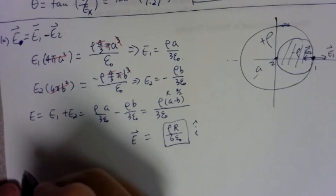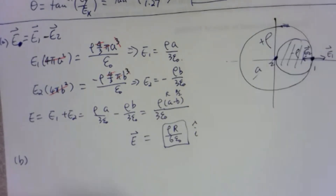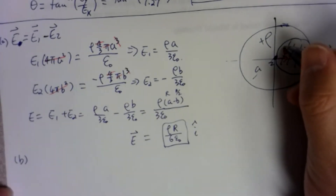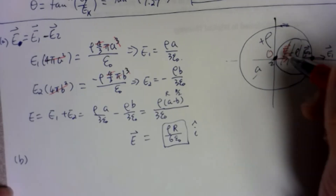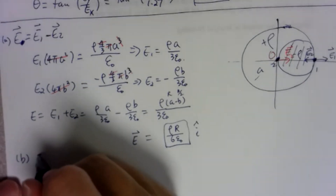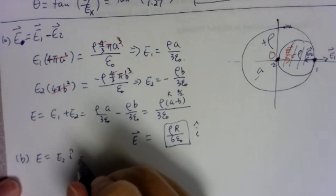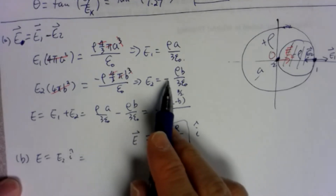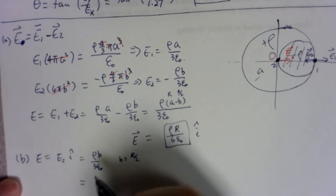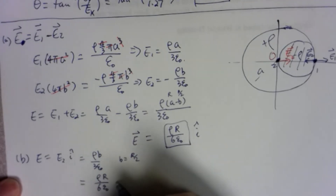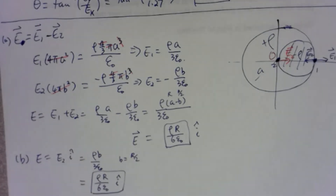At point 2, which is at the center of the large sphere, the contribution from the large sphere is zero by symmetry. Only the small sphere with −rho contributes, but since the point is outside it, E2 points in the positive x-direction with magnitude rho B / (3 epsilon naught). Since B = A/2, this is also rho A / (6 epsilon naught) in the x-direction — the same magnitude as point 1.